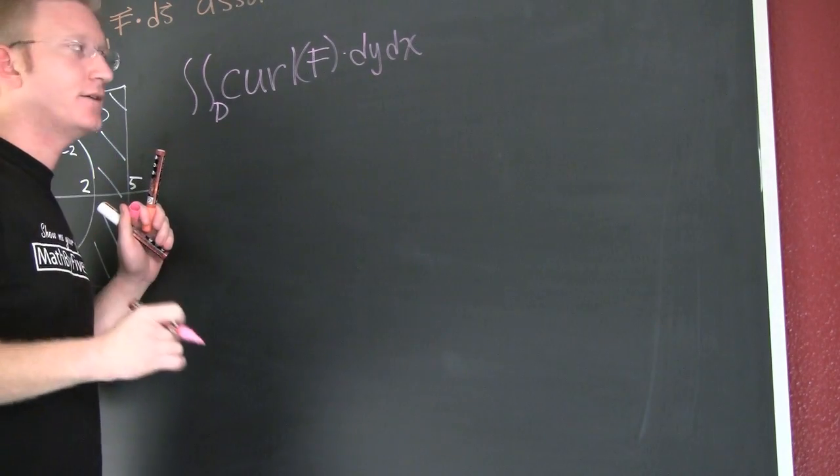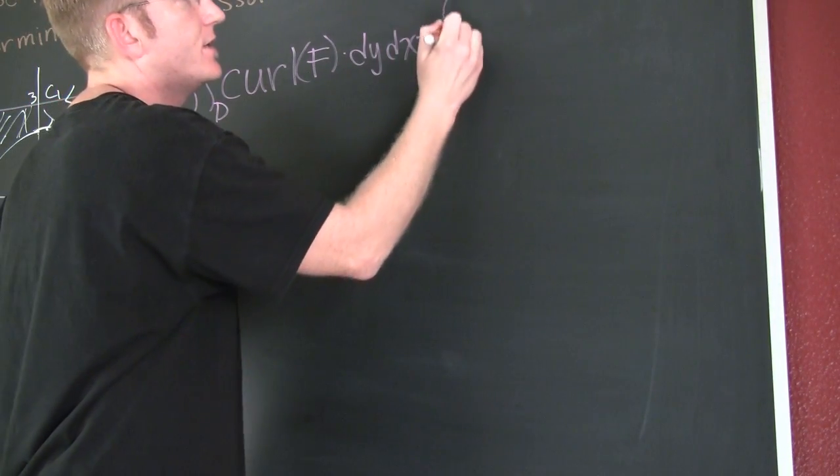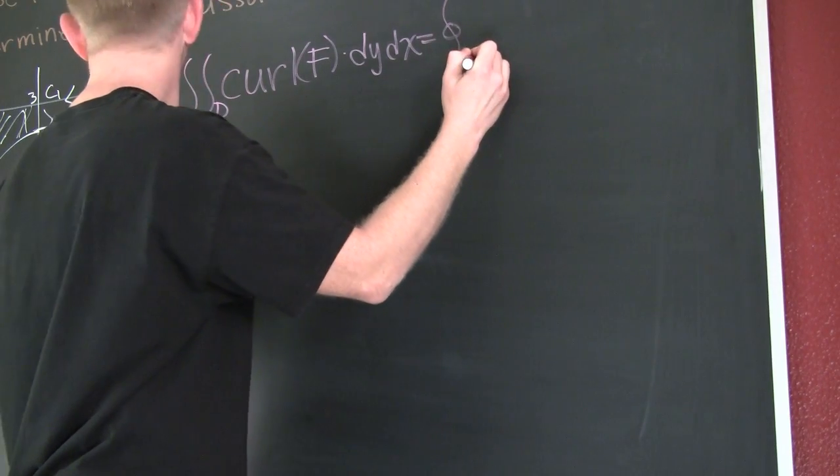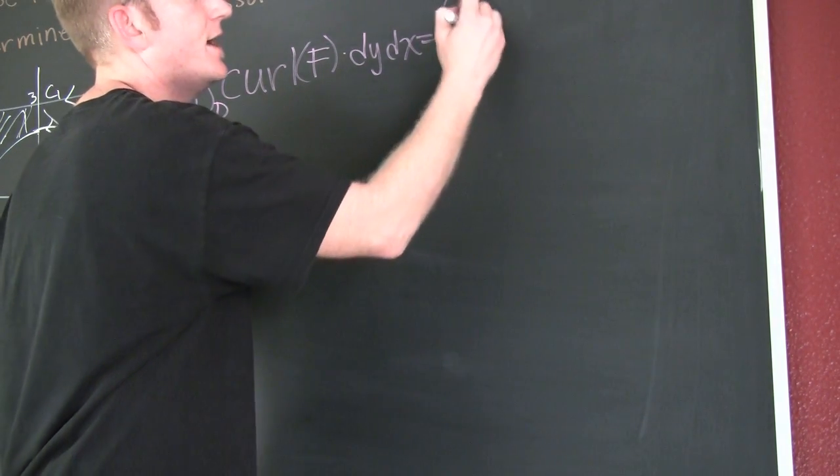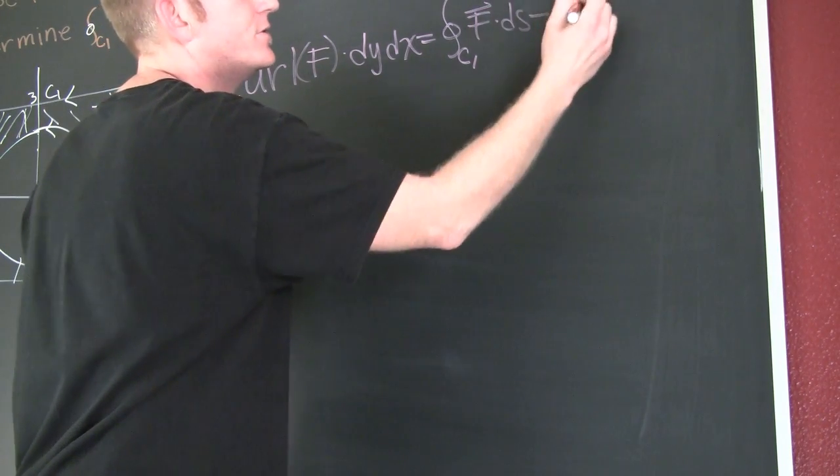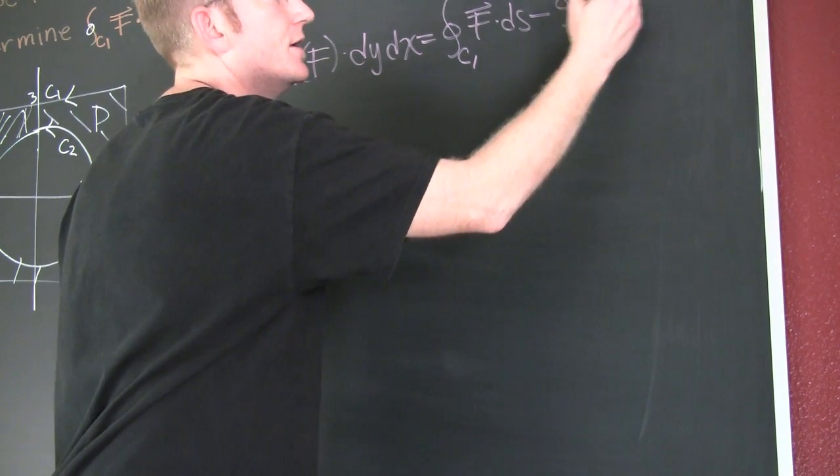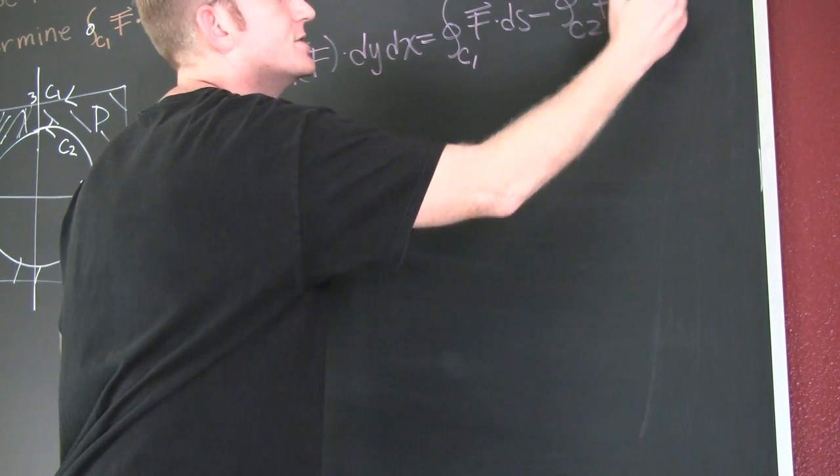The change rectangularly. Well, if we look at that, we know this to be the integral C1 F dot DS minus the integral around C2 F dot DS.